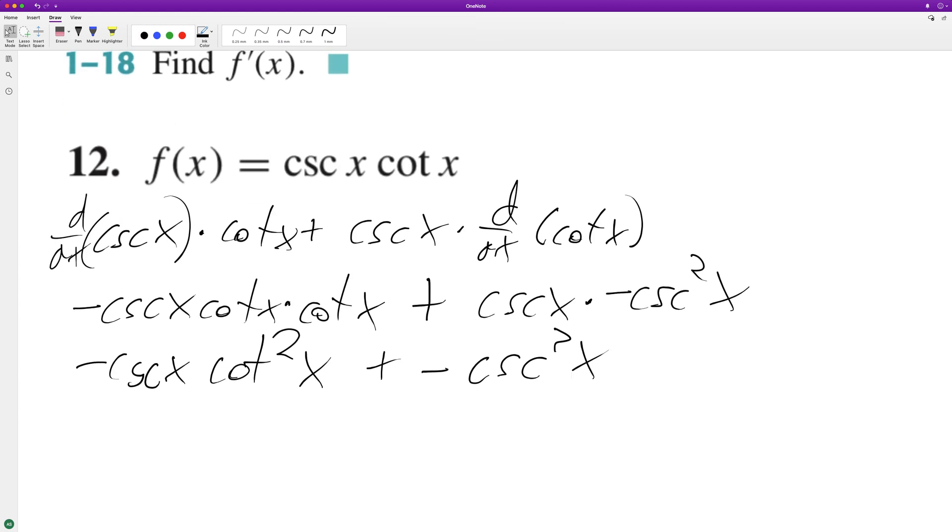And we can factor out a negative cosecant x and we end up with cotangent squared x plus cosecant squared x. And that's it.